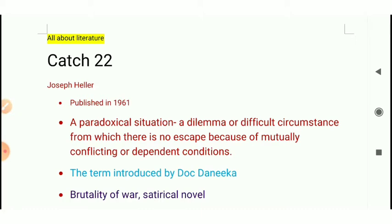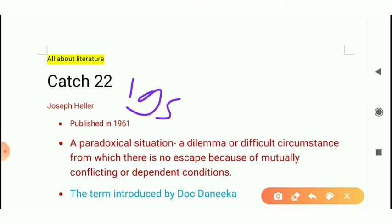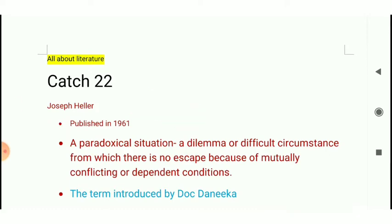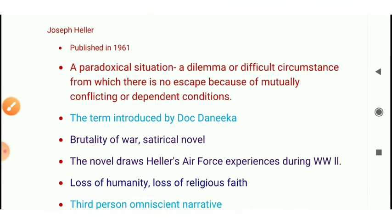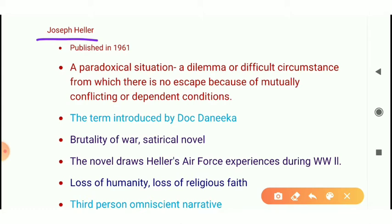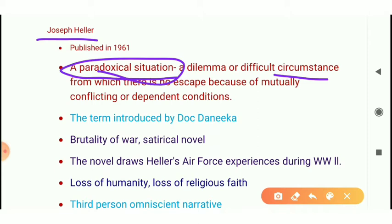It is assumed that Joseph Heller has written this novel in 1953 and published it in 1961. The term 'catch-22' was coined by Joseph Heller in this novel. Before this novel it didn't exist in the English language or dictionary. Heller explained in an interview that it is a paradoxical situation, a dilemma or difficult circumstance from which there is no escape because of mutually conflicting or dependent conditions.